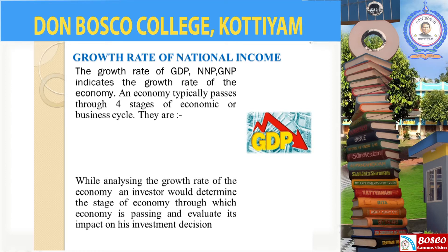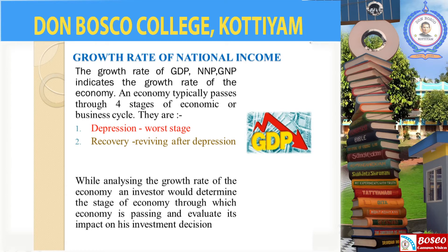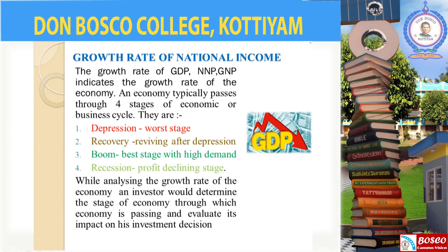An economy has mainly four stages. The first is the depression stage, which is the worst stage in the economy, where demand will be low, inflation will be high, interest will be high, and production will be low. The next stage is the recovery stage, which is a revival after depression. As the name suggests, it is a recovery stage where demands pick up, production increases, and employment also increases. The next stage is the boom stage, which is the best stage with high demand. In this stage, investments will be high as well as profits, and there will be high demand for products.